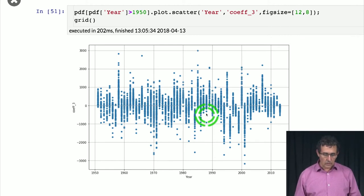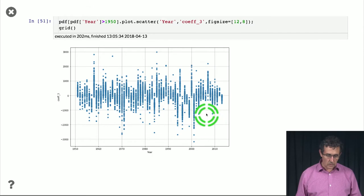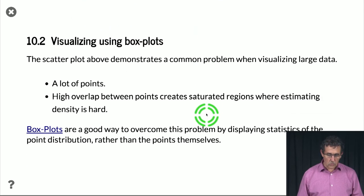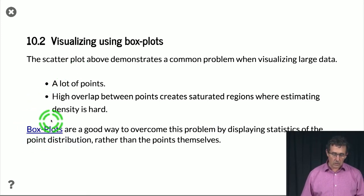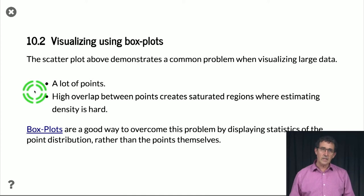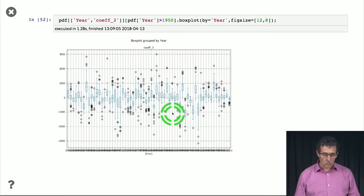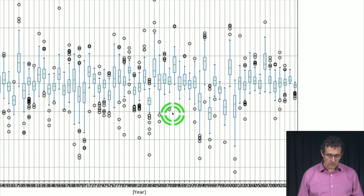So a different solution to doing it in this case is to use box plots. I'm not going to explain here in detail. There's a pointer that you can go and study what are box plots. Basically, they tell you for each year, they tell you for each value of the year, what's the distribution of the values of the coefficient.